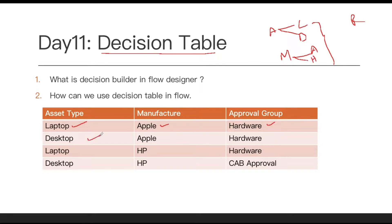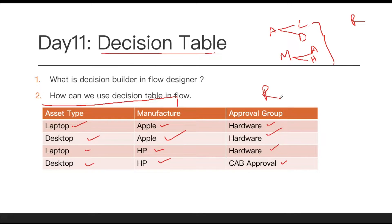If it is desktop and manufacturer is Apple it will again go to the hardware group. But if it is laptop and manufacturer is HP it will also go to hardware. However if it is desktop and HP the approval will go for CAB approval. So these two fields are inputs and the approval group is the output or result.